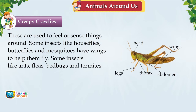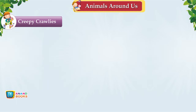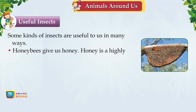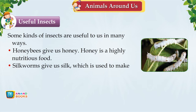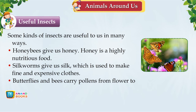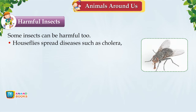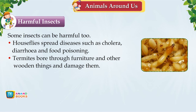Some insects are useful while others are harmful. Useful insects: honey bees give us honey, which is highly nutritious; silkworms give us silk for fine clothes; butterflies and bees carry pollen from flower to flower, helping plants reproduce; earthworms make soil airy and fertile. Harmful insects: house flies spread cholera, diarrhoea and food poisoning; termites damage furniture; mosquitoes spread malaria and dengue; wasp and bee stings are very painful.